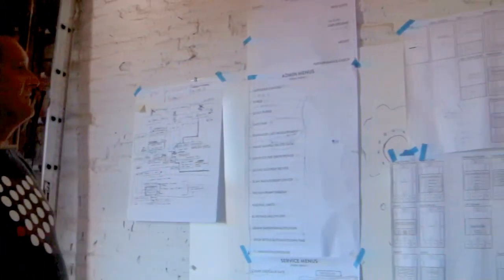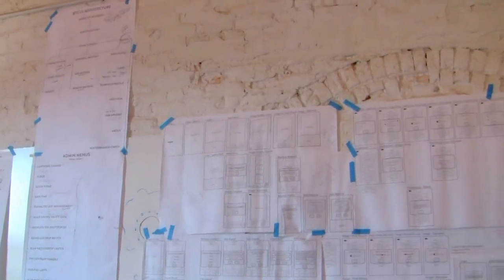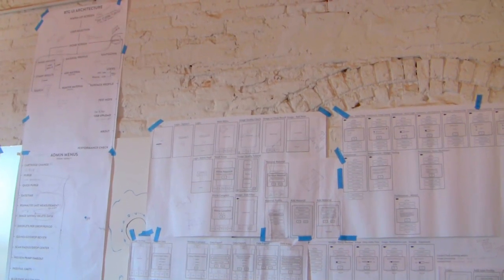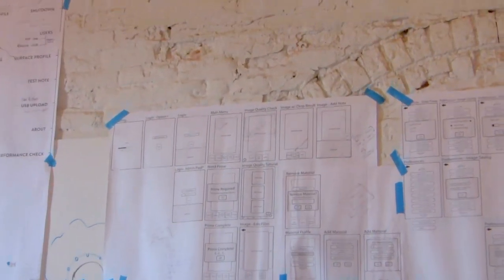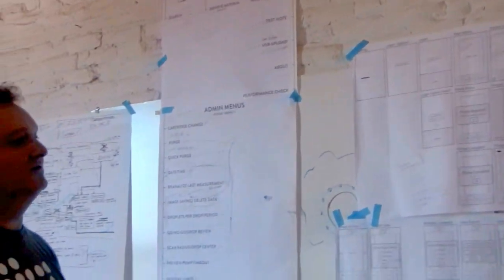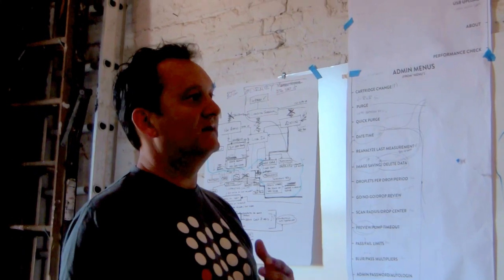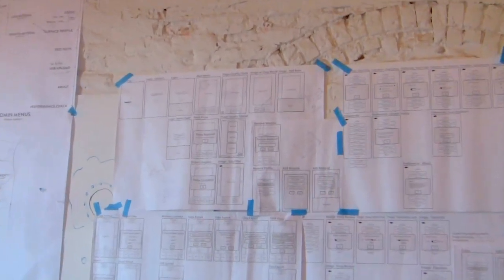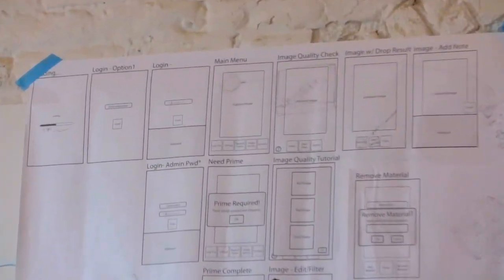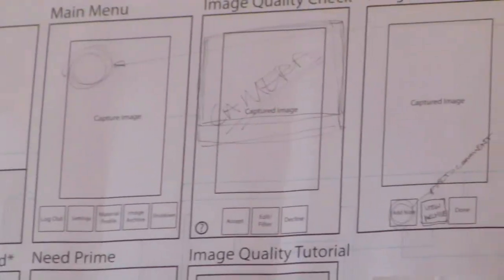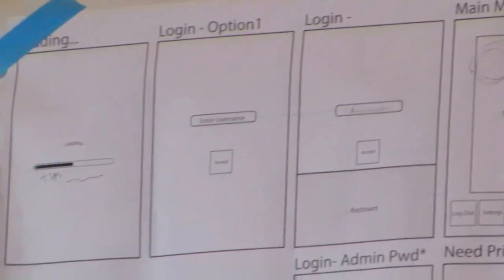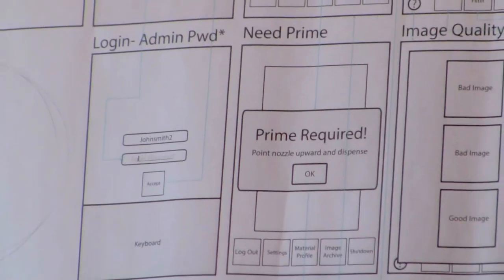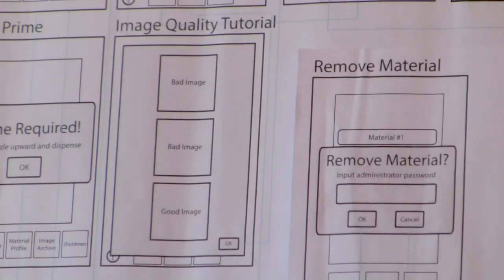The next thing you do after you have your journey map completed is go into a wireframe or workflow process. That takes all the features, the journey, and combines it into a workable format where someone could actually navigate through. These are all the screens for the GUI and all the variables that someone can set inside of it. We're not really concerned about aesthetics at this point — we're more concerned about the workflow and what kind of space is going to be required for the interface.